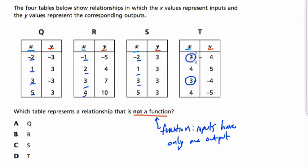So notice that three as an input gets you four, and it also gets you negative four. There's nothing wrong with that. It's just that's a relationship, but it's not a function. Three as an input can only lead to one output. It can't lead to both four and negative four. So that means our answer is T. All right, I hope this helps.